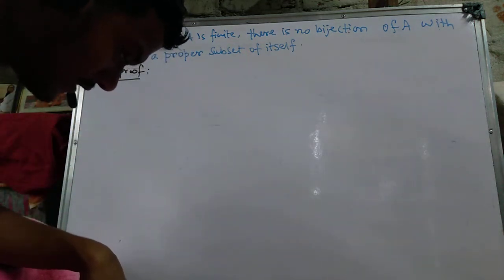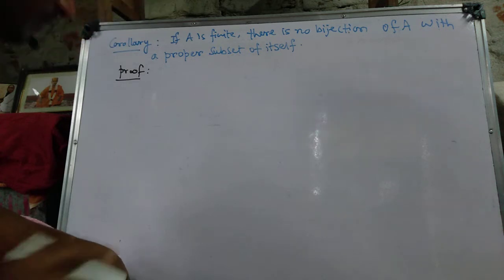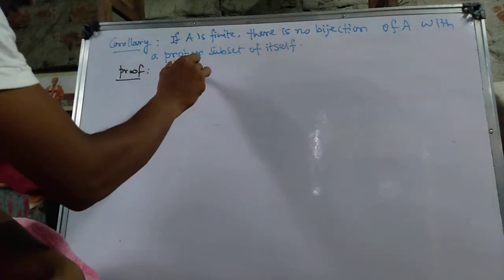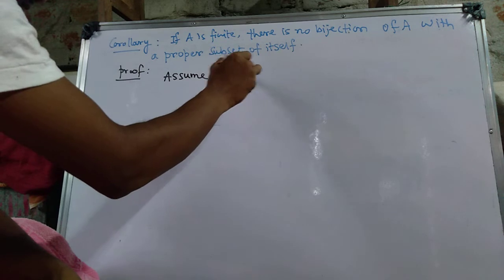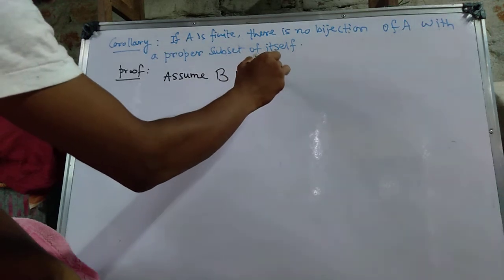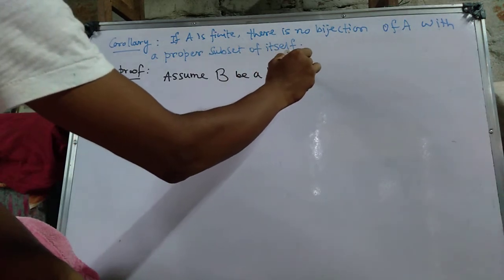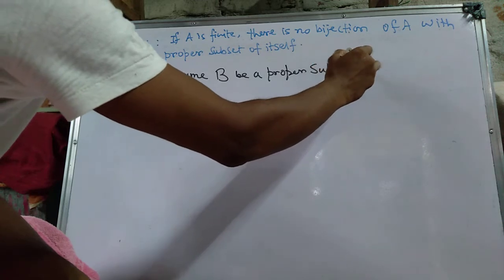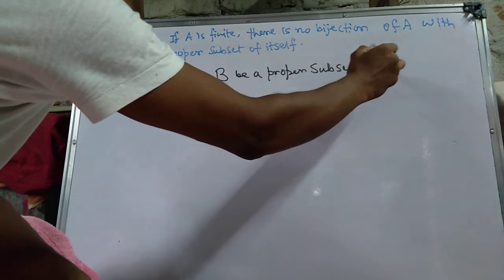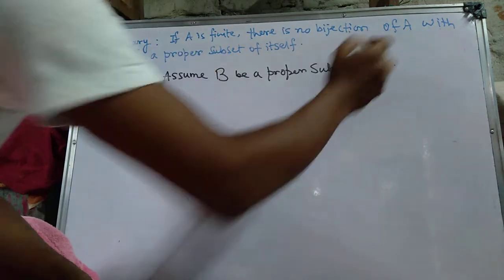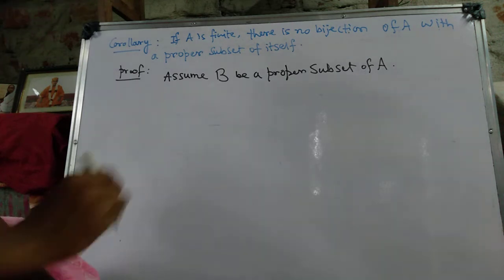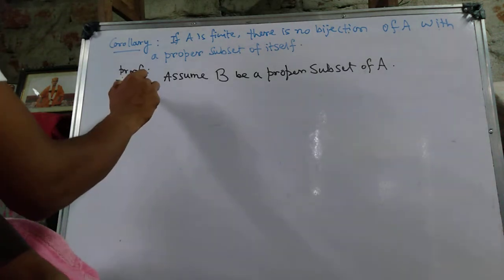We prove it. Assume B is a proper subset of A, and that f from A to B is a bijection.